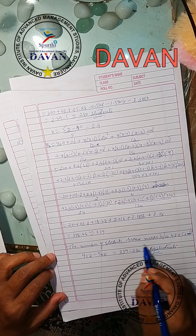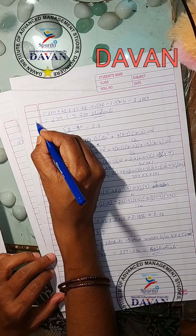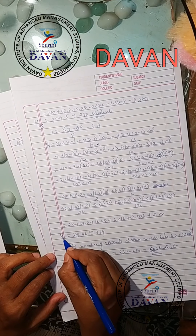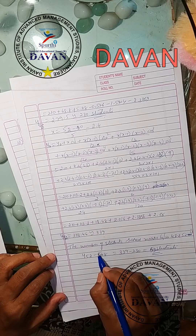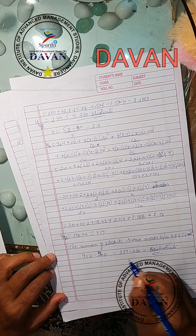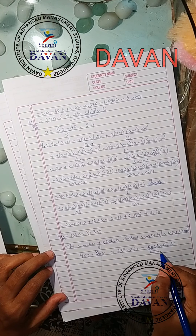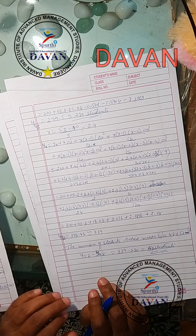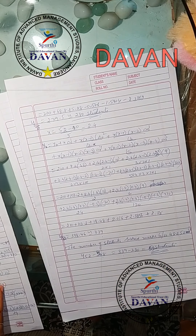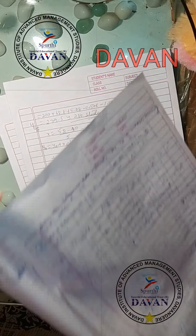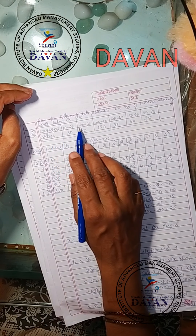Similarly, we find for x equals 52: x equals (52 minus 40)/5 equals 2.4. Substitute and get the answer. Finally, the number of students who scored between 48 and 52 marks equals y52 minus y48, which gives 339 minus 280 equals 59 students scored marks between 48 and 52.